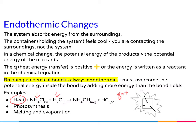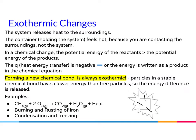Other examples of endothermic changes are photosynthesis, melting, and evaporation. Contradictory to what your brain wants to tell you, but if you think about it: as something is melting, it's going from a solid to a liquid, and therefore it needs to absorb energy. The same as going from a liquid to a gas — you would need to absorb energy to do so.